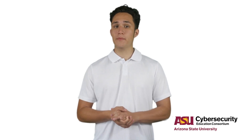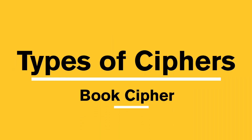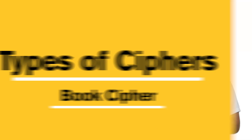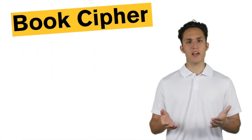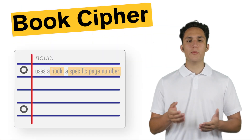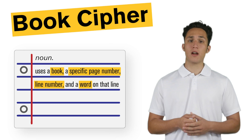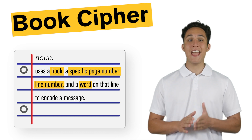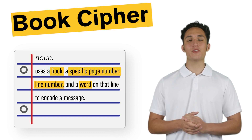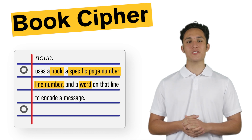Welcome. Today we're learning about book ciphers. Now, what is a book cipher? A book cipher uses a specific page number, line number, and a word in order to encode a message.